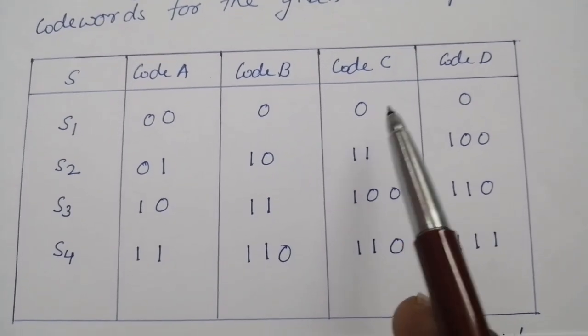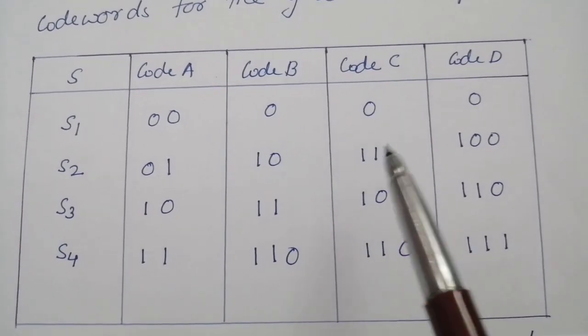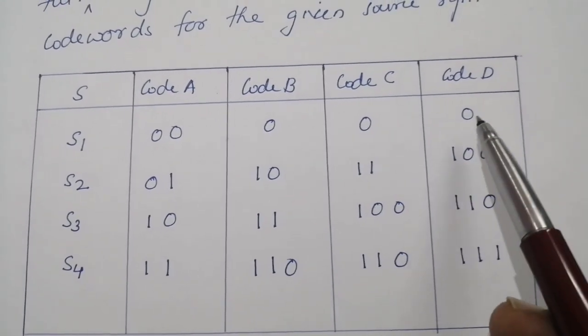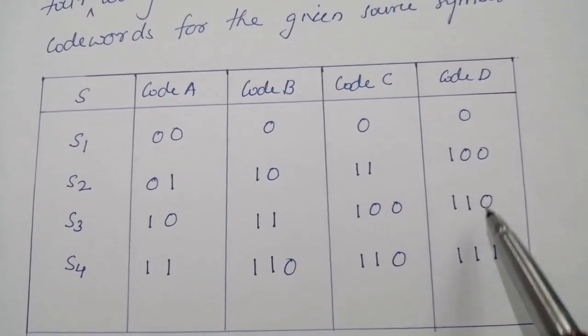In coding scheme C, first has length 1, 2, 3, 3. In coding scheme D, the first codeword has length 1, then 3, 3, 3.